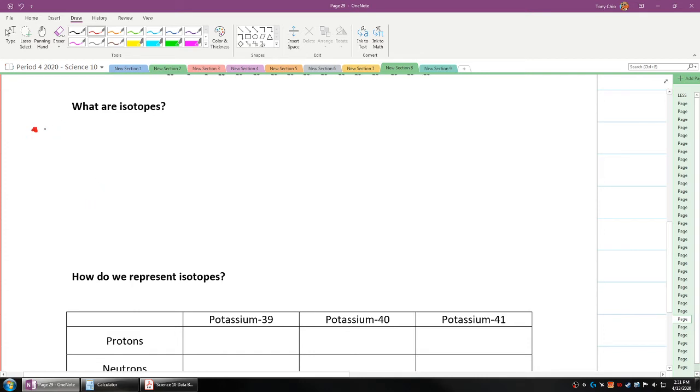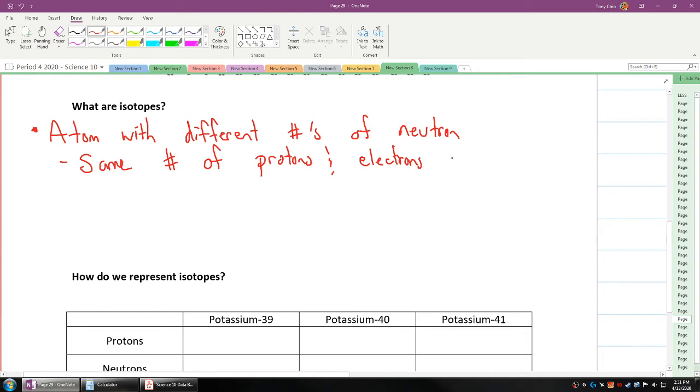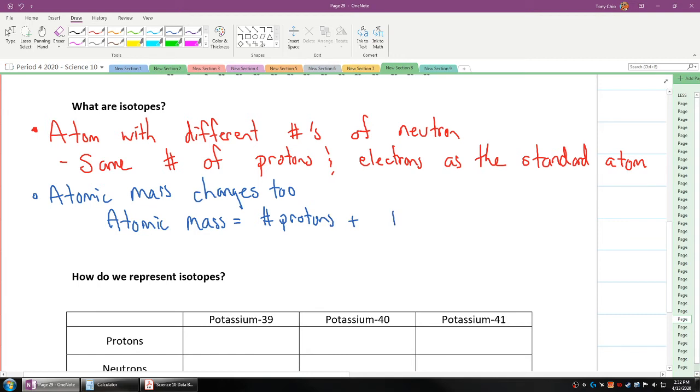Then what is an isotope? An isotope is where it's an atom with different numbers of neutrons. So that means now you can change the number of neutrons. So in this case, it's still the same number of protons and electrons as the standard atom, but now the number of neutrons change. Because the neutrons change, the atomic mass changes with it. Because we remember that the atomic mass is the number of protons plus the number of neutrons.